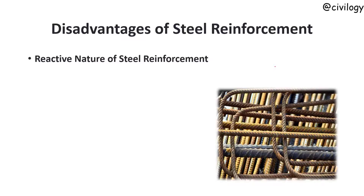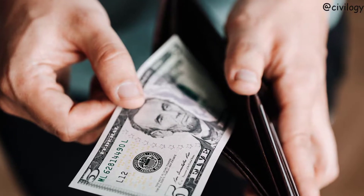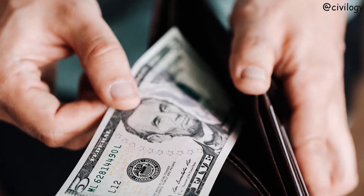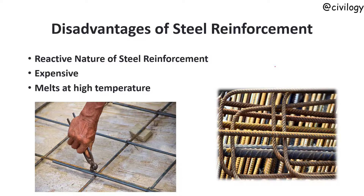Disadvantages of steel reinforcement include its reactive nature — in concrete structures where the cover is small and subjected to external moisture, the reinforcement will undergo a reaction and start to corrode, which can lessen the strength of the concrete and lead to failure. Additionally, the cost of steel reinforcement is high, increasing the overall construction cost. Also, steel will melt at high temperatures, which is the reason why steel reinforcement bars are tied and not welded.